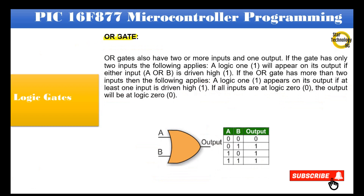OR gate: OR gates also have two or more inputs and one output. If the gate has only two inputs, a logic 1 will appear on its output if either input A or B is driven high. If the OR gate has more than two inputs, a logic 1 appears on its output if at least one input is driven high. If all inputs are at logic 0, the output will be at logic 0.